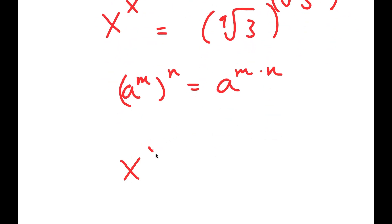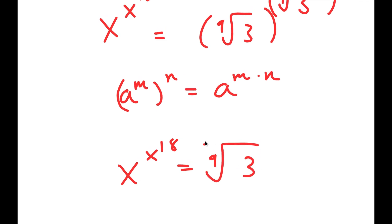So I get x to the power of x to the power of 18 is equal to the 9th root of 3 to the power of the 9th root of 3 to the power of 18.